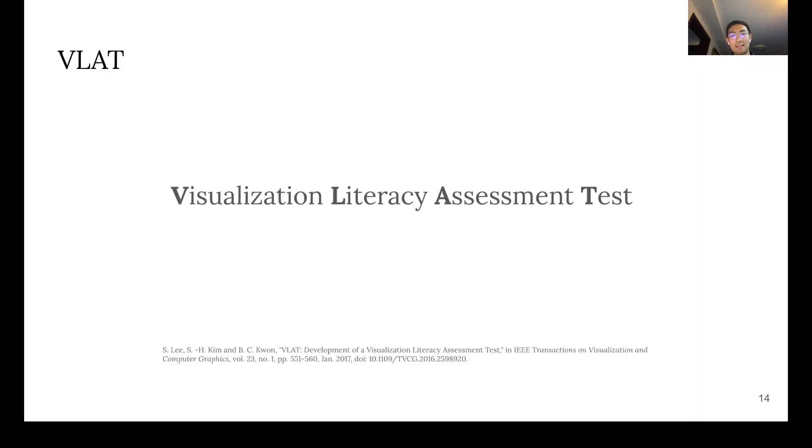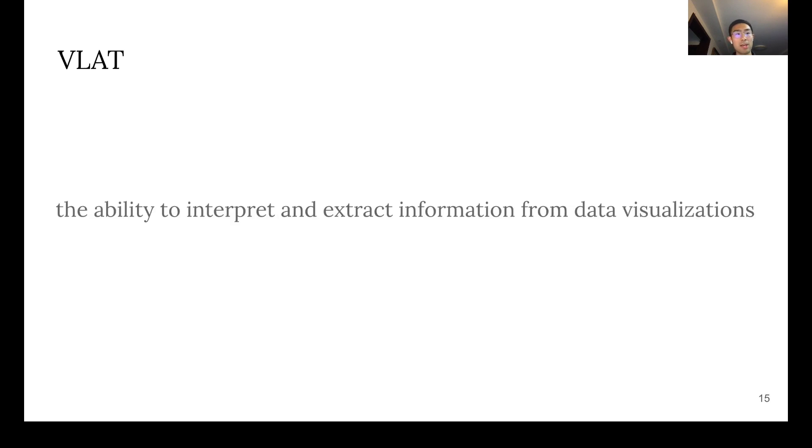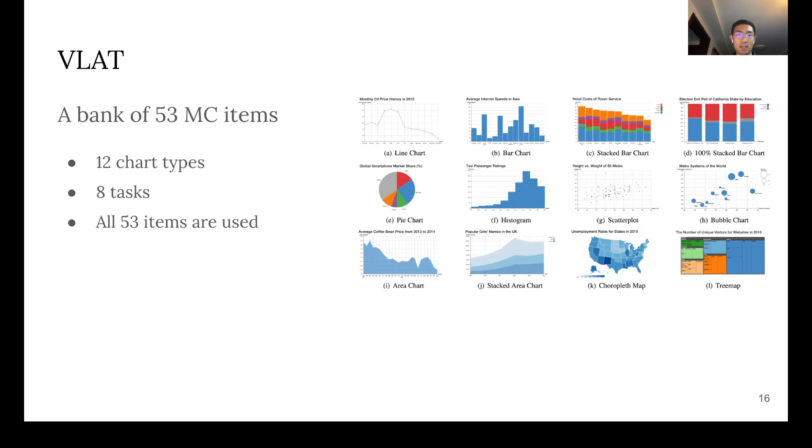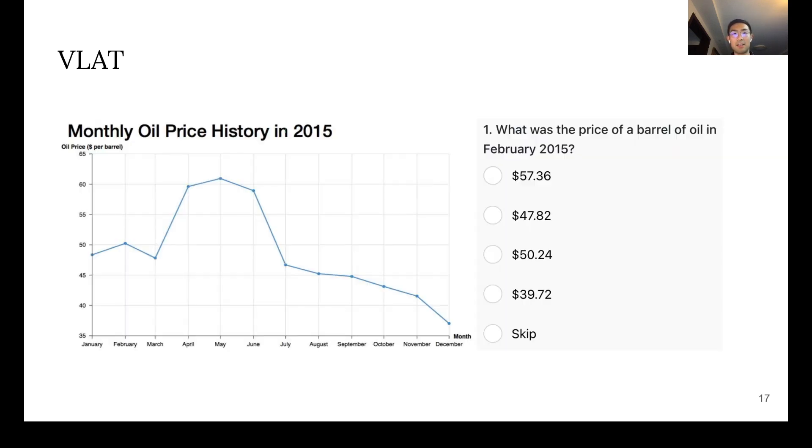Let's begin with VLAT. Li et al. developed VLAT in 2017 in order to measure the ability to interpret and extract information from data visualizations. They created a bank of 53 multiple-choice items that cover 12 chart types and 8 tasks. On the actual test of VLAT, all 53 items are used. Here is an example of a VLAT question of a line chart that asks the test taker to retrieve value.